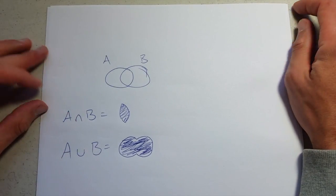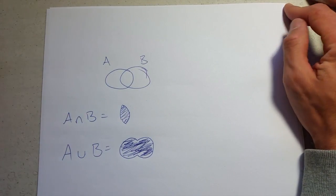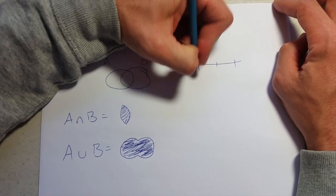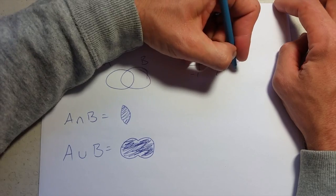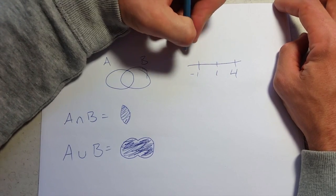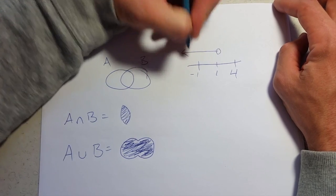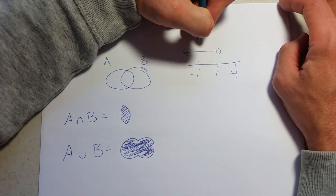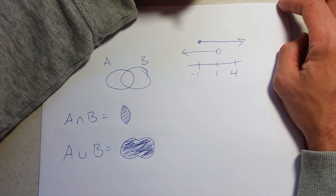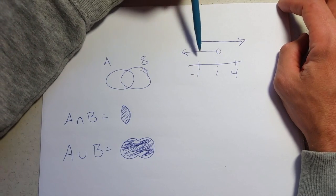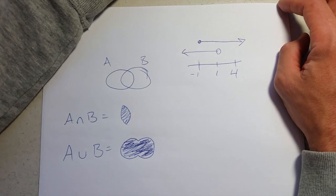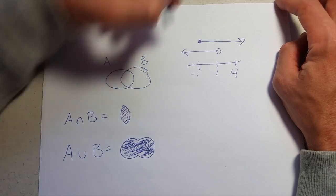Now if we do an example on a number line, we could intersect these two sets right here. What do they have in common? Well, certainly between negative one and positive one they have everything in common. What about the endpoints?